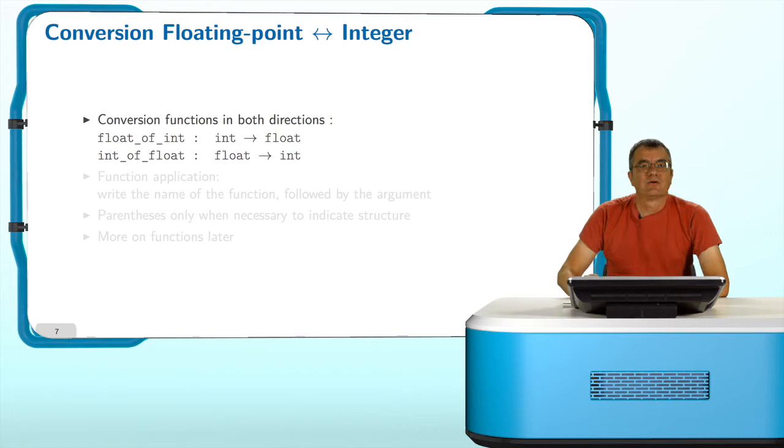For instance, between floating point numbers and integer numbers, we have float_of_int to convert from int to float and int_of_float to convert from float to int.